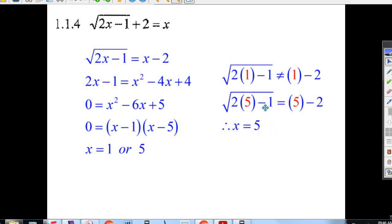But 2 times 5 minus 1 is 9, and the square root of 9 is 3, and 5 minus 2 is 3. So, therefore, x equals 5 is your solution.